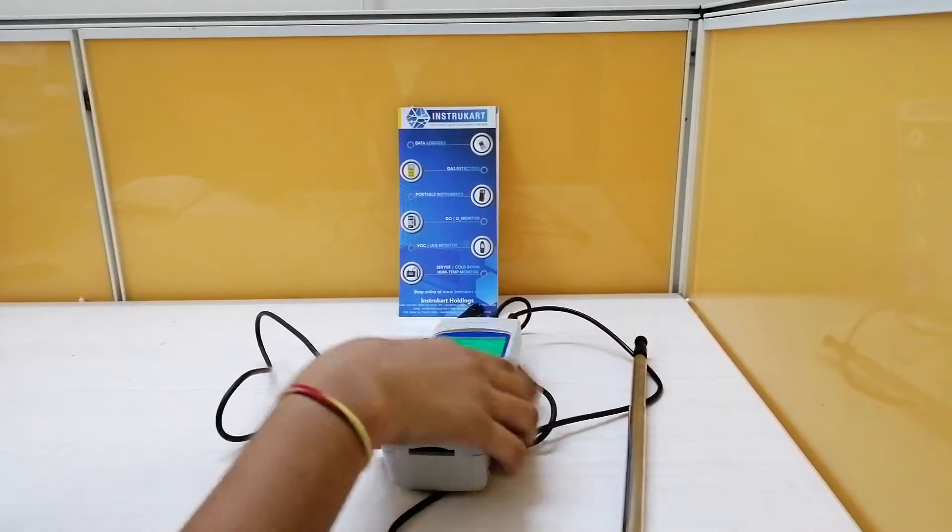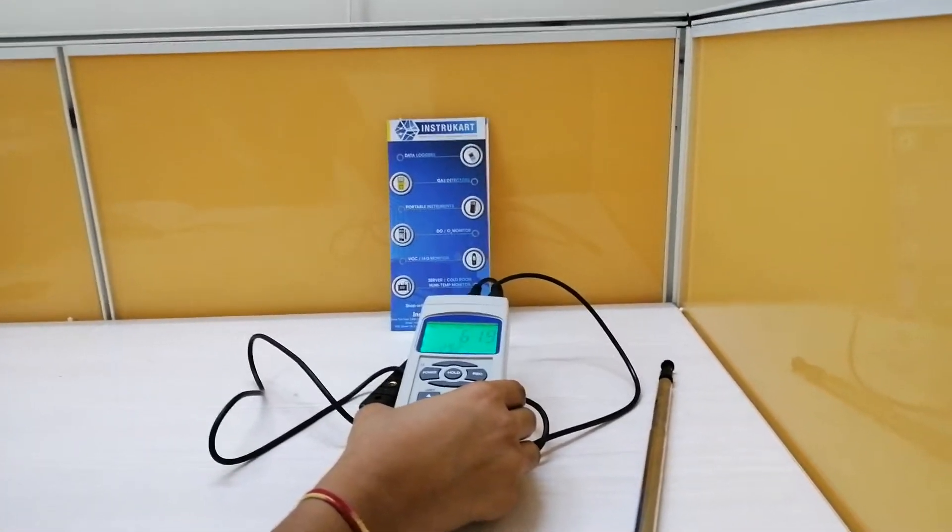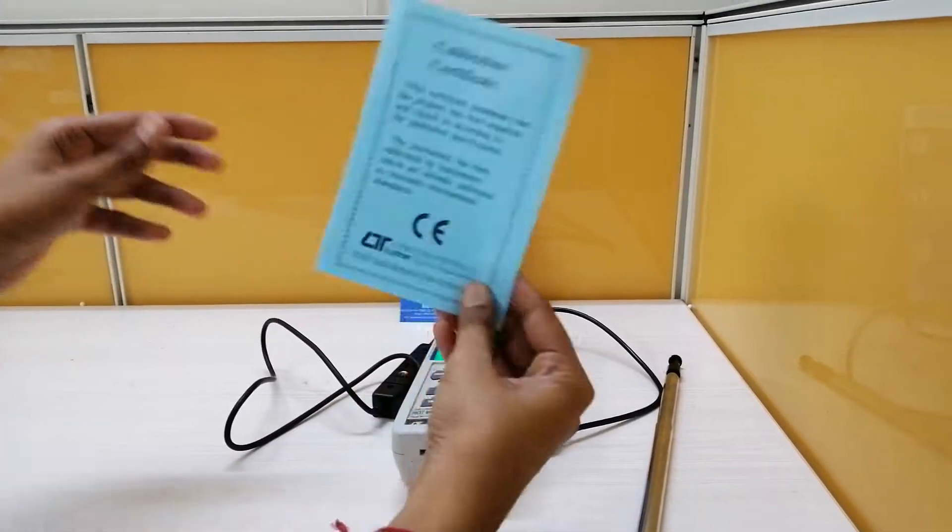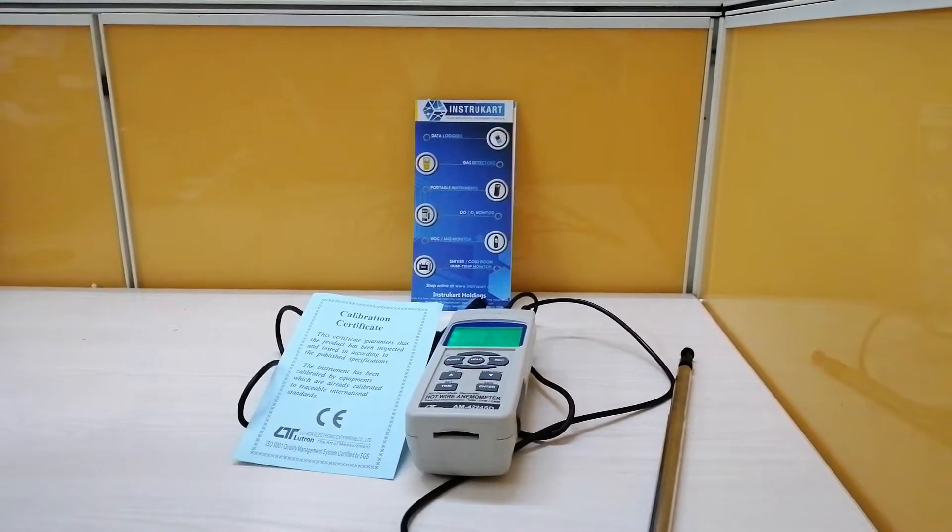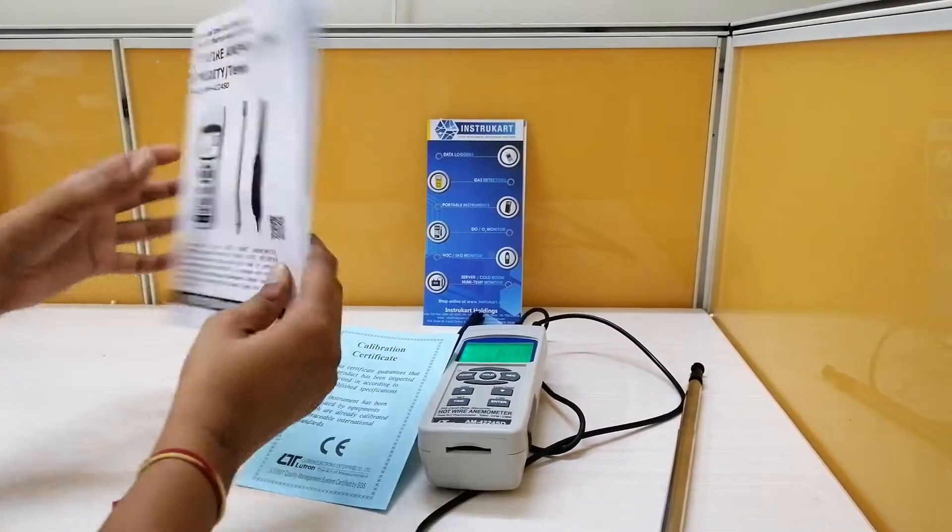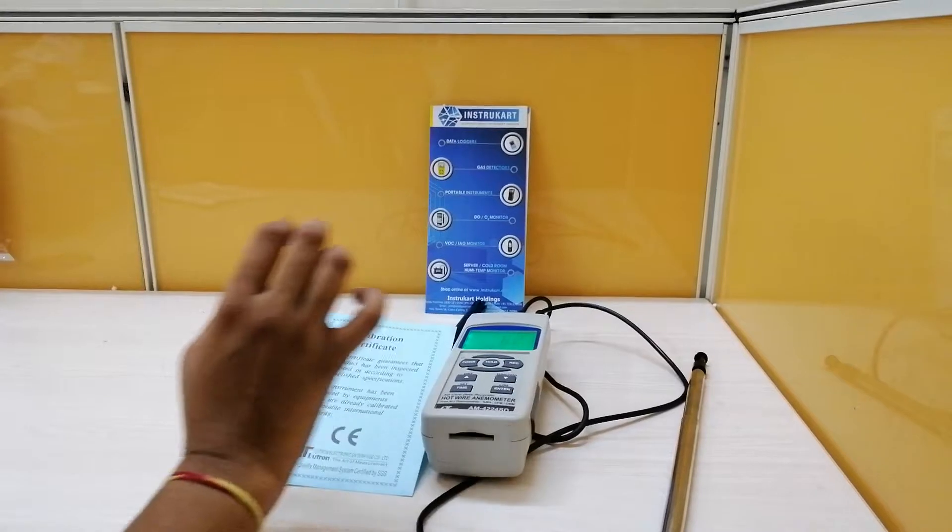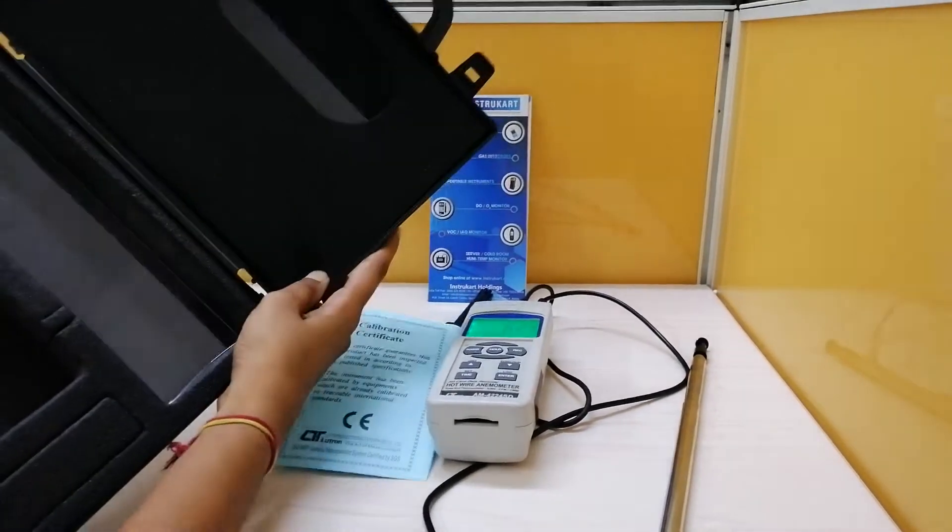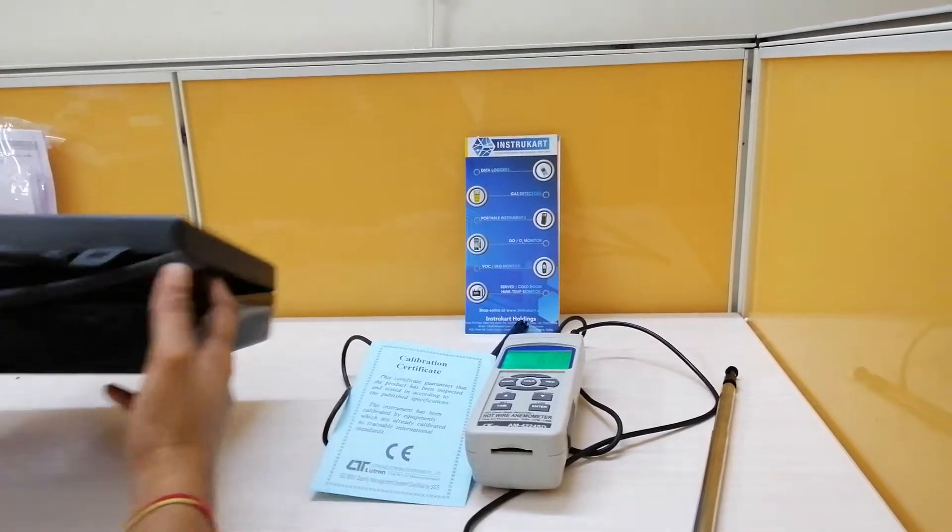This anemometer comes with the calibration certificate from the Lutron. This is the calibration certificate, and this is the instruction manual that comes along with this product for installations. And this is the carrying case in which this product will come.